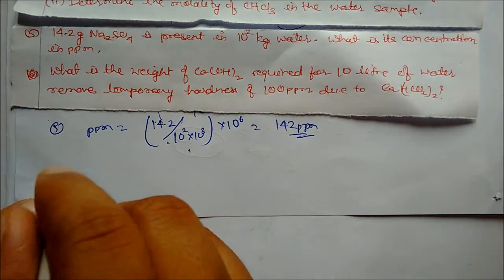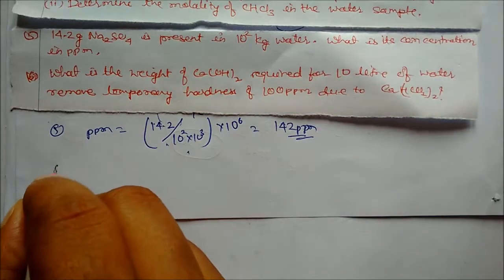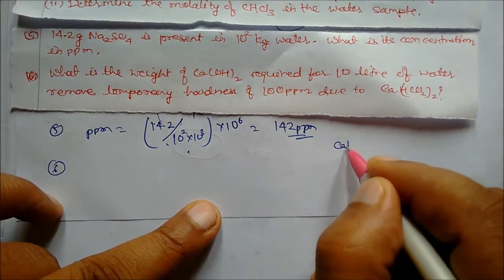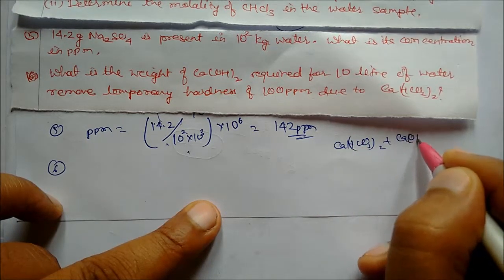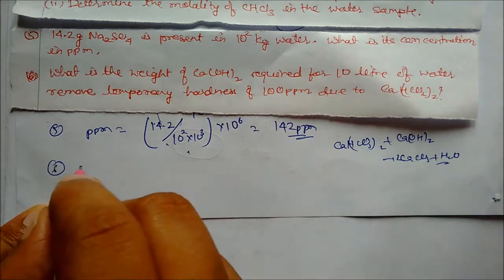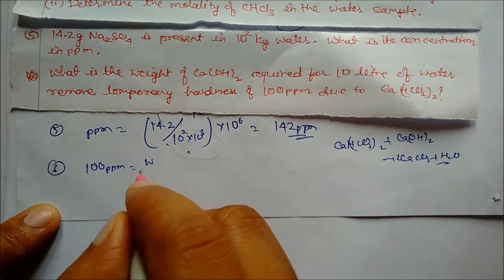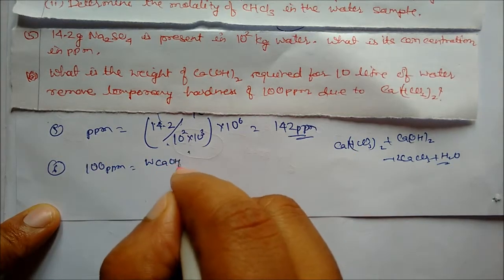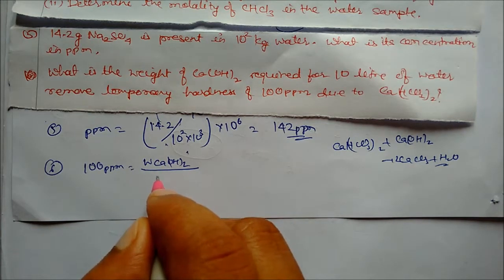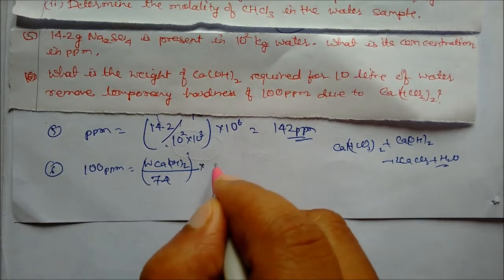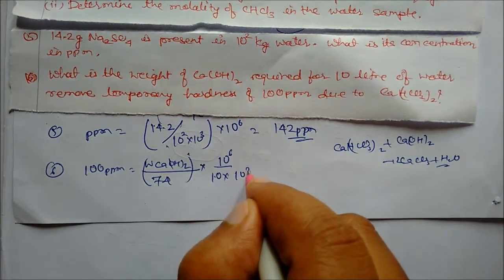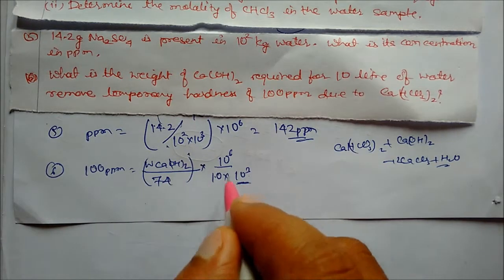Question six: 100 ppm hardness is given due to calcium bicarbonate. Ca(HCO₃)₂ reacts with Ca(OH)₂ to give CaCO₃ + H₂O — moles are equal. We need to find the weight of calcium hydroxide. 100 ppm means 100 g of calcium bicarbonate per 10⁶ grams of water. Given 10 liters of water, weight of the solute is calculated as 100 × (10 × 10³) / 10⁶ = 1 gram.